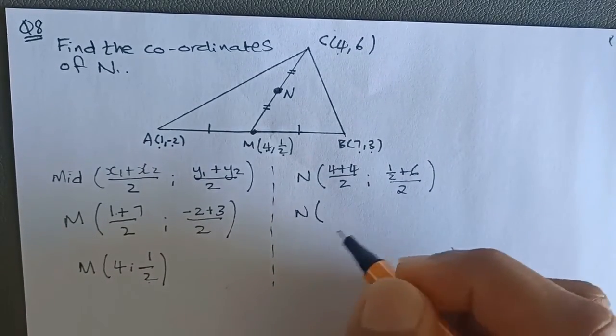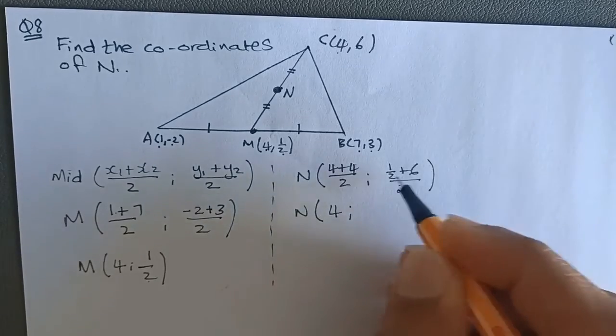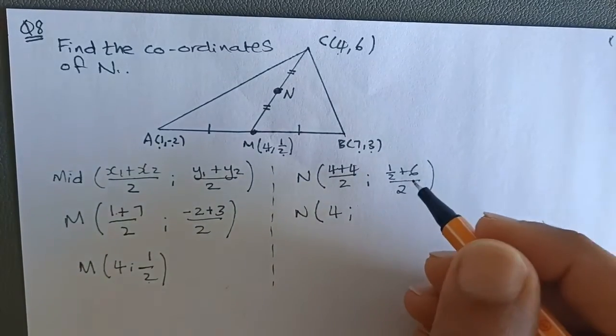We can use a calculator, we can use decimals as well. 4 plus 4 is 8 divided by 2, which is 4. 6 and a half divided by 2 is 3.25.